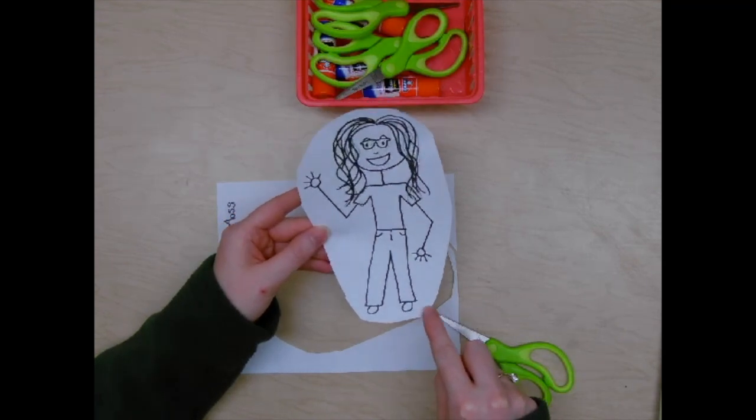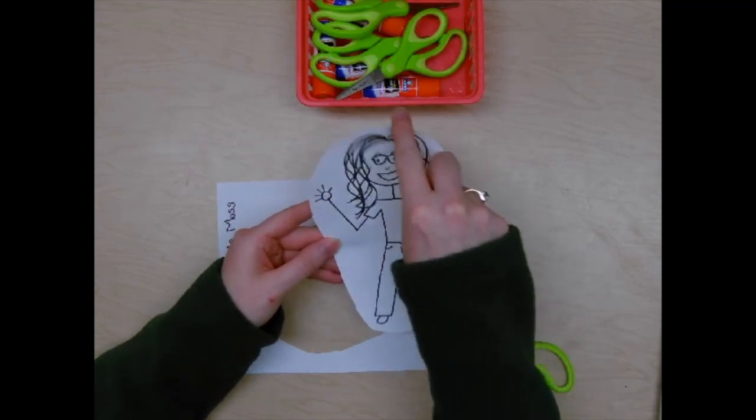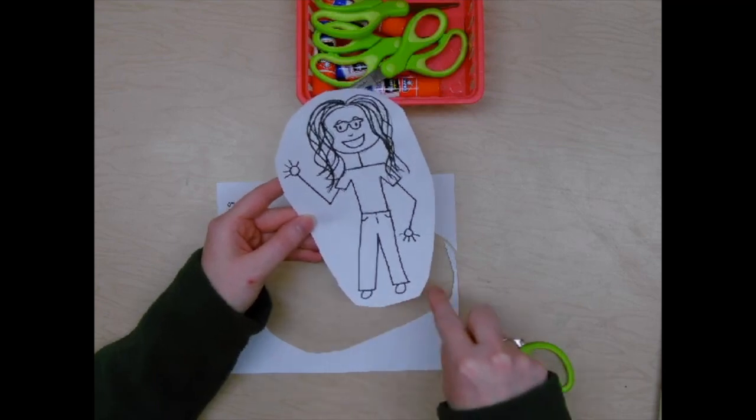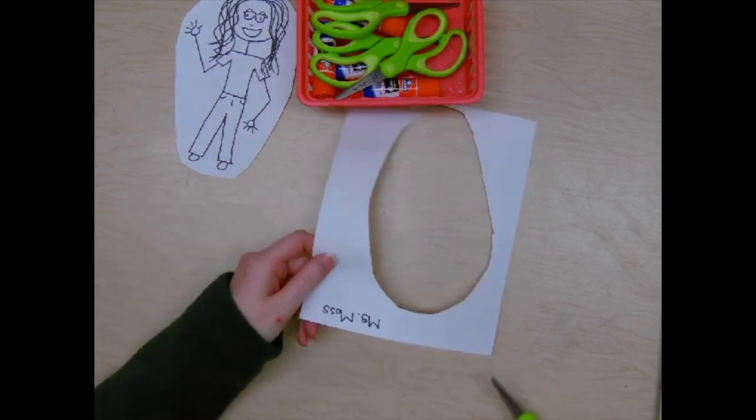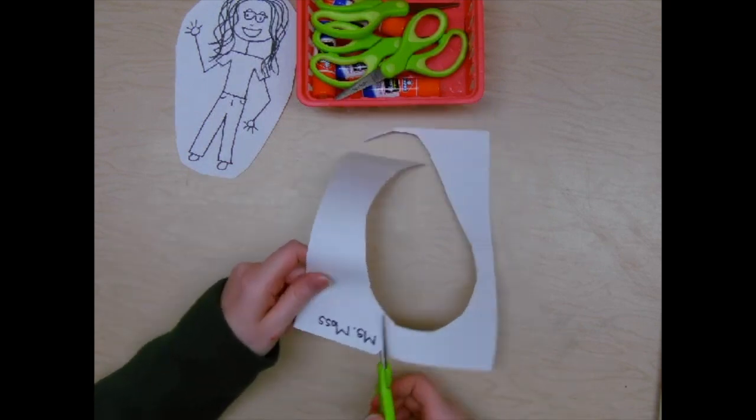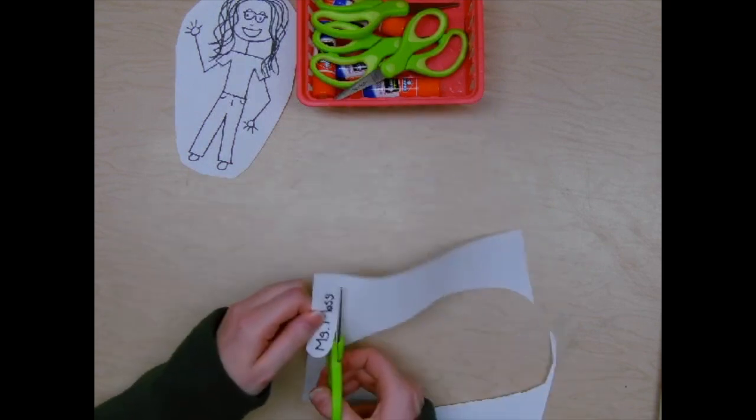You can see here, I didn't cut super close to where I drew. I just cut kind of around the edges. After you've cut out your person, you can set that to the side. And remember we need to cut out our name as well.